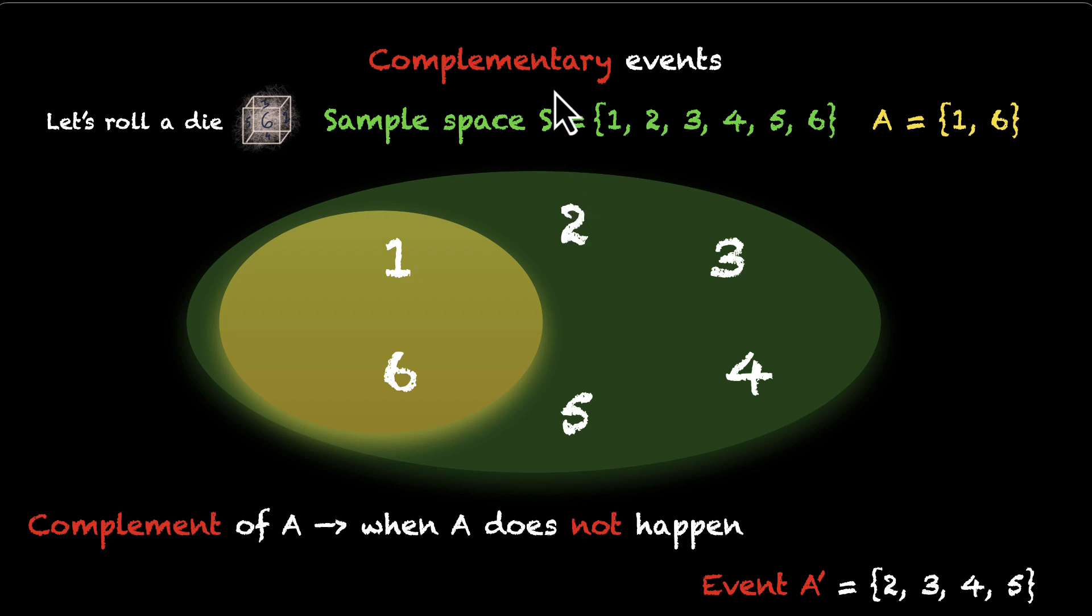For this chapter, the word complement means the exact opposite. If you want something to happen, so everything, every single scenario where that does not happen, if you bundle it together and you call it an event, it's called the complement of that event.